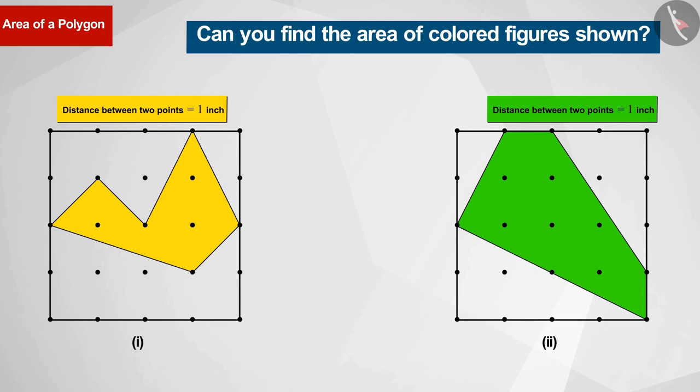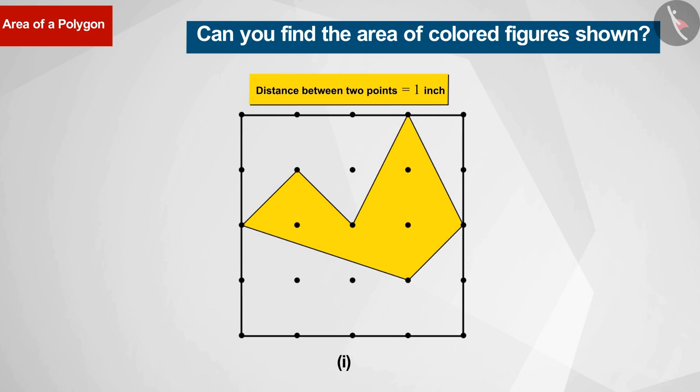Let's start with the first figure. This is a polygon whose area can be found by the method we learned in the previous video. If we connect these points of this shape in a straight line, you can see that we get three triangles.